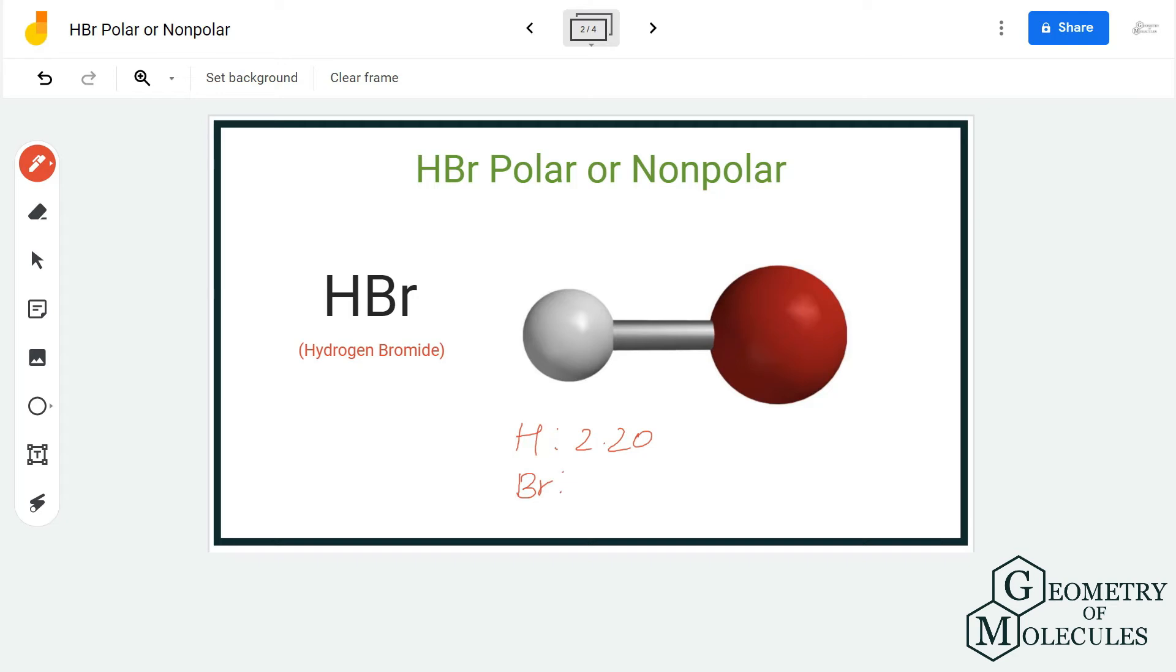The difference between electronegativities of hydrogen and bromine atom is higher than 0.4, which means that this bond is a polar bond. As bromine atom is more electronegative, it will try to pull the shared electrons towards itself.